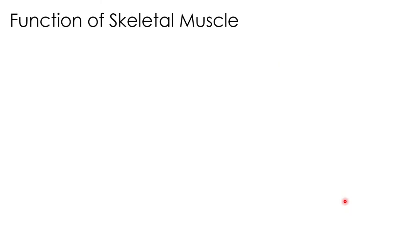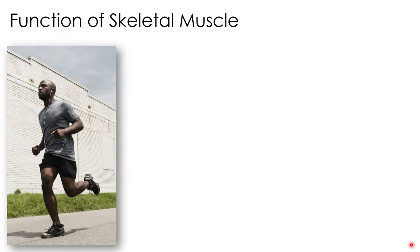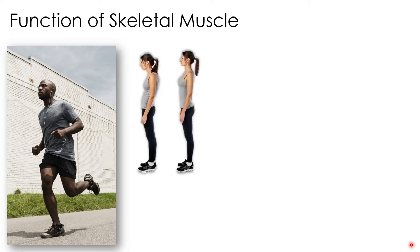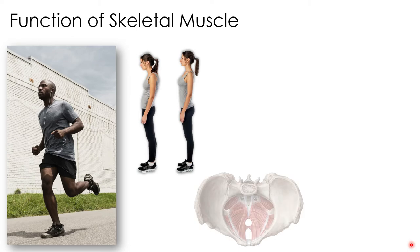Skeletal muscle specifically has multiple functions, the most obvious of which is movement. Bones of the skeleton move when muscles contract and pull on the tendons that attach those muscles to bone. Skeletal muscle also works to maintain posture and body position — without constant muscular contraction, we couldn't sit upright or stand without falling over. Skeletal muscle also protects soft tissues; for example, the abdominopelvic cavity is lined with layers of skeletal muscle that help support and protect the internal organs from injury.